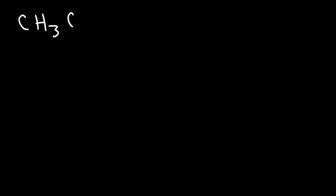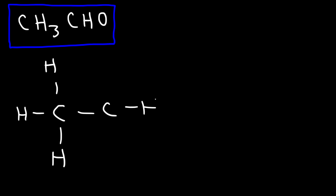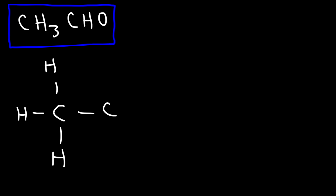What about CH₃CHO? The left side CH₃ is a carbon with three hydrogens — we're familiar with that. This carbon needs four bonds, so we draw a bond to the next carbon atom. Now for CHO: we can't put hydrogen between carbon and oxygen because hydrogen would have two bonds, and we can't arrange it so that carbon only has three bonds. The only way to give carbon four bonds, hydrogen one bond, and oxygen two bonds is to put a double bond between carbon and oxygen and connect the hydrogen directly to that carbon. So this is the Lewis structure for CH₃CHO — this is acetaldehyde, a type of aldehyde. Aldehydes typically have this functional group.